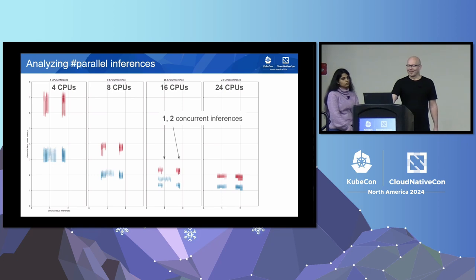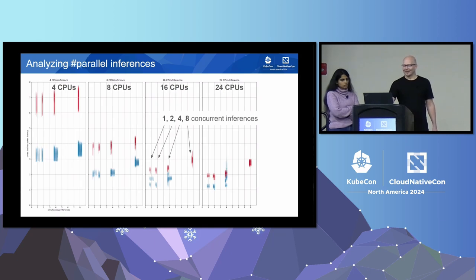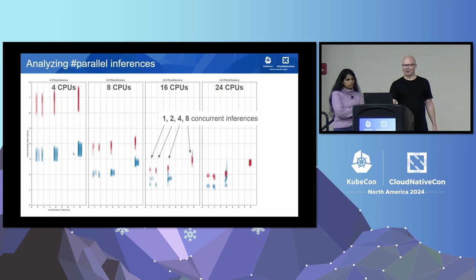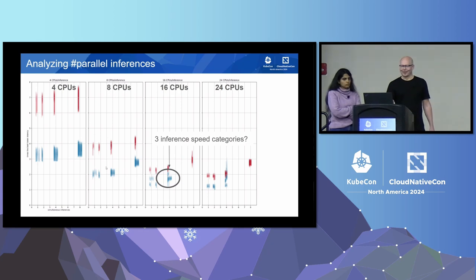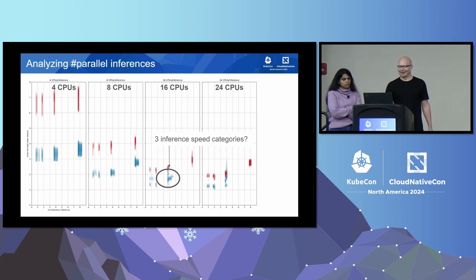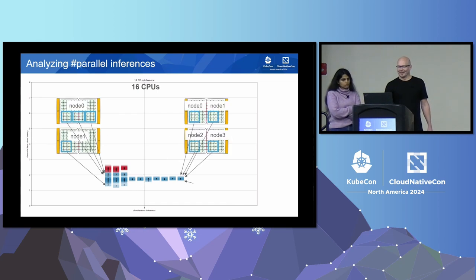We are now analyzing the number of parallel inferences running on that node, adding 2, 4, and 8 concurrent inferences. If we are using 4 CPUs per inference, the latency does not really grow much even running 8 inferences in parallel. But if we are using 8 CPUs per inference, then the latency growth is pretty clear going from 4 to 8 concurrent inferences. Before analyzing too far, let's notice something — it seems we have three speed categories of inferences; latency is pretty much split in three. What is causing that?